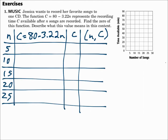Number 1: Jessica wants to record her favorite songs to one CD. The function c equals 80 minus 3.22n represents the recording time c available after n songs are recorded. Find the zero of this function and describe what this value means in context. Since it's solved for c, c is like the y and n is like the x. Make a table with an n column, using the values at the bottom of the graph: 5, 10, 15, 20, 25. Then the c equals 80 minus 3.22n column. After substituting, we'll find ordered pairs to plot.